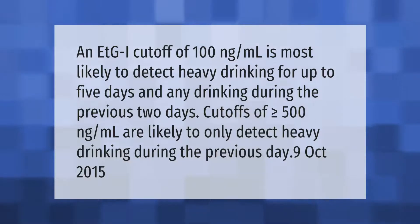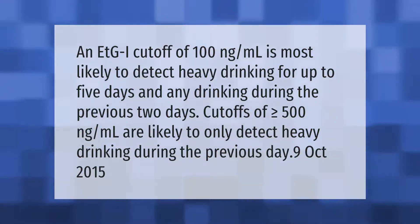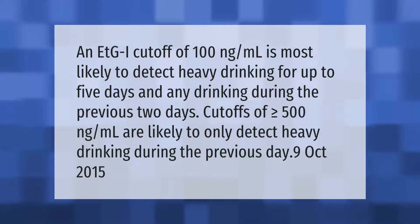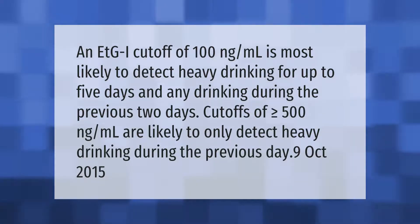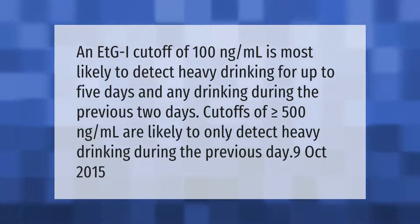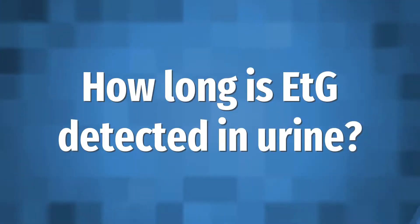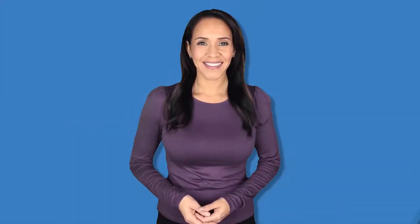An EtG cutoff of 100 nanograms per milliliter is most likely to detect heavy drinking for up to five days, and any drinking during the previous two days. Cutoffs of greater than or equal to 500 nanograms per milliliter are likely to only detect heavy drinking during the previous day.